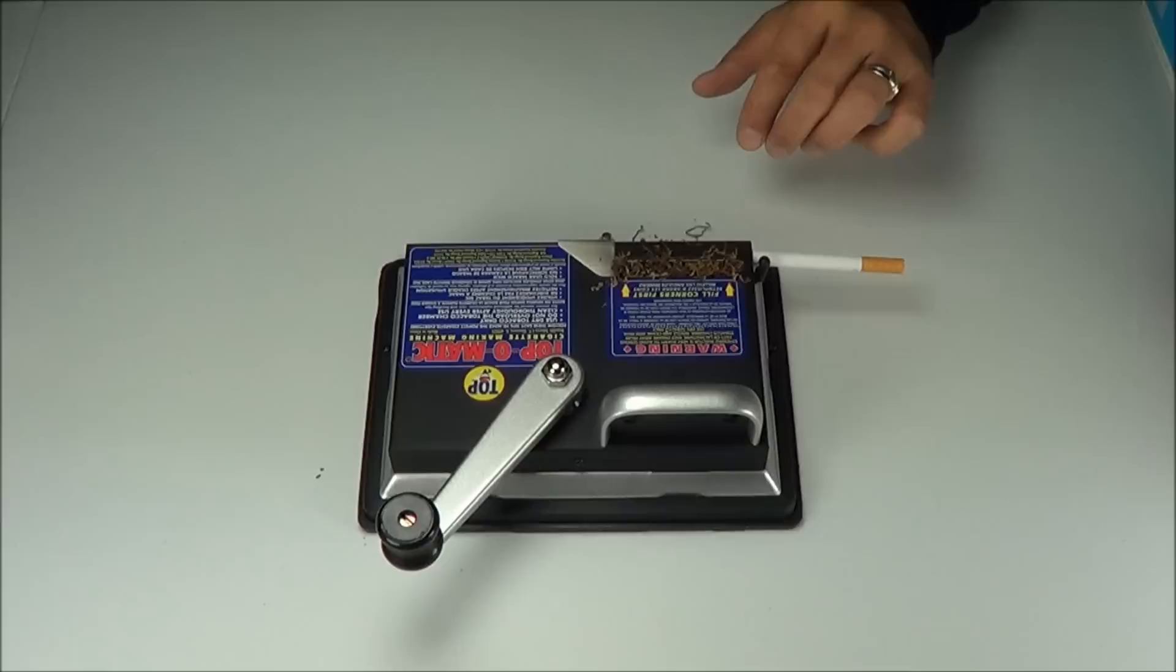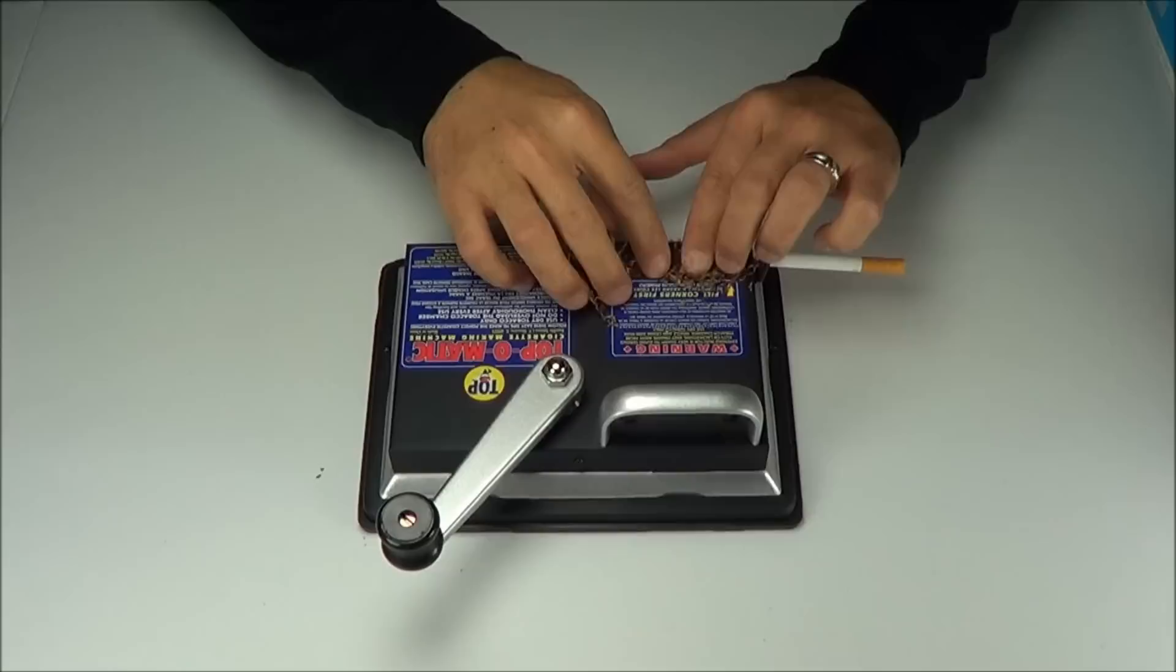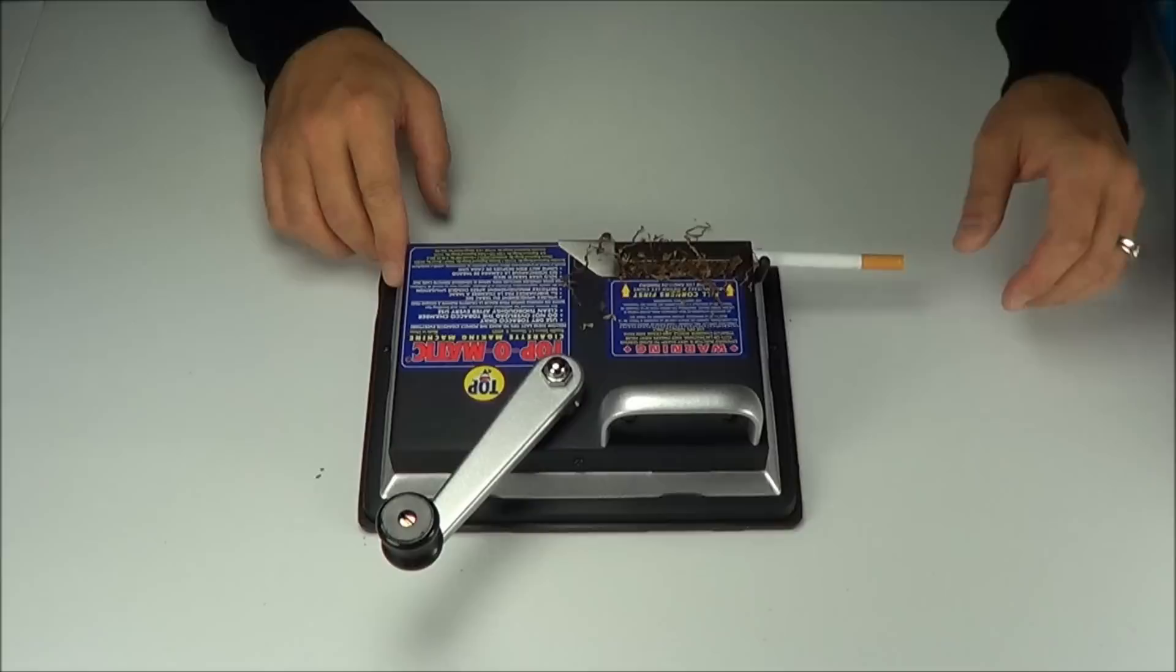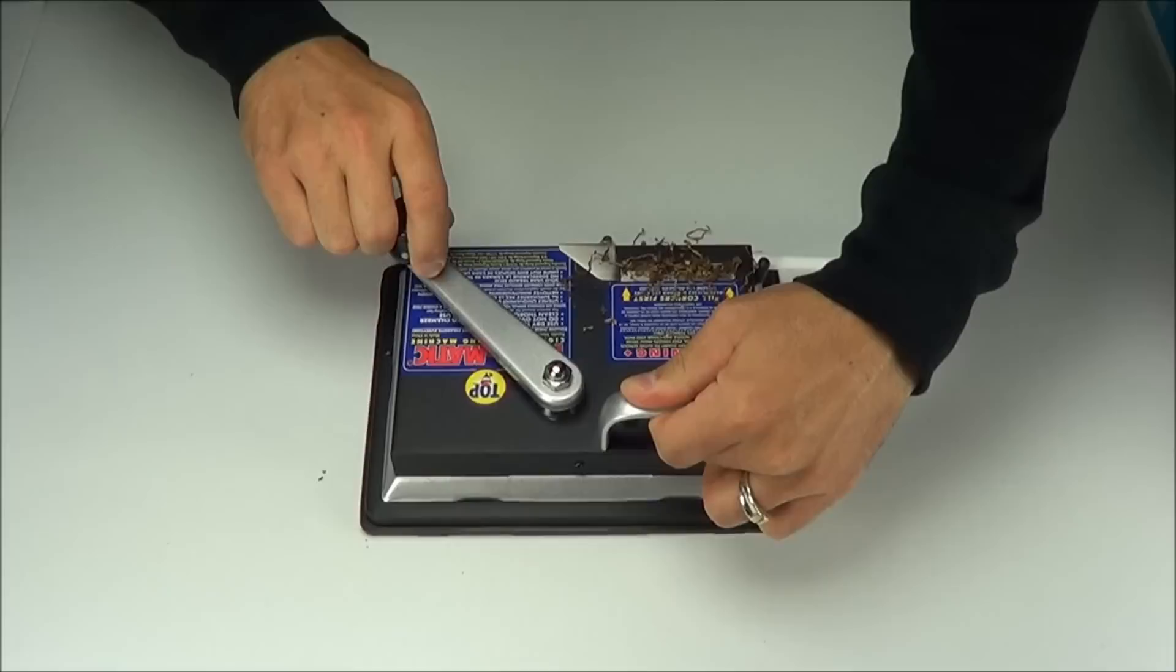You'll be able to see how tightly of a cigarette you like once you get used to the machine a little bit. Okay, so push down, just lightly pack. At this point the machine is ready to engage. So you just hold this with one hand and then right here with this lever you just pull down.